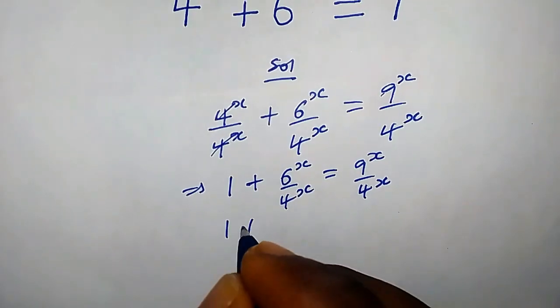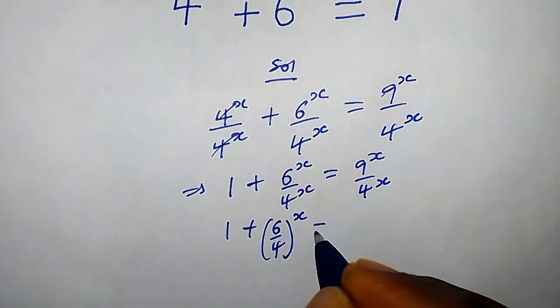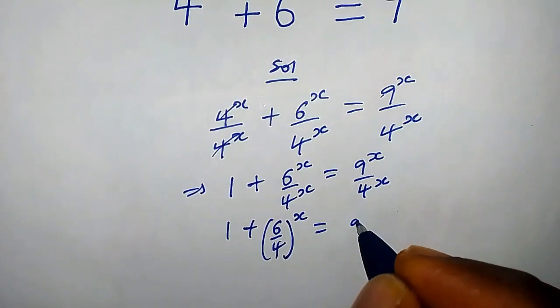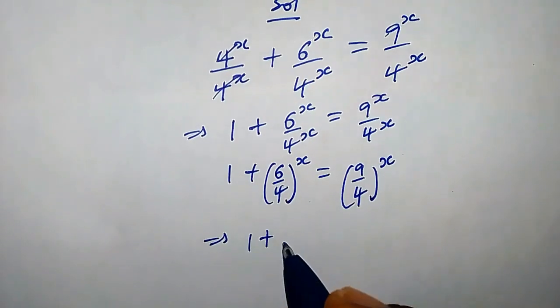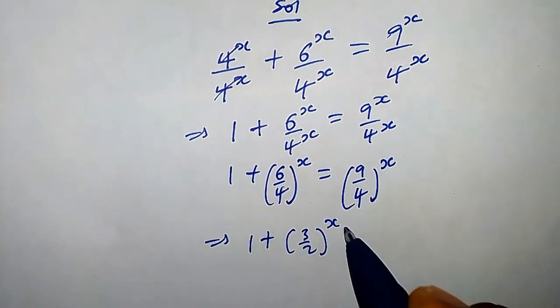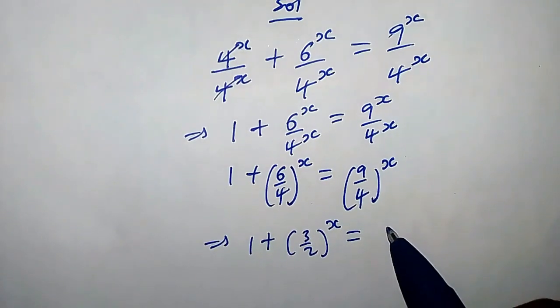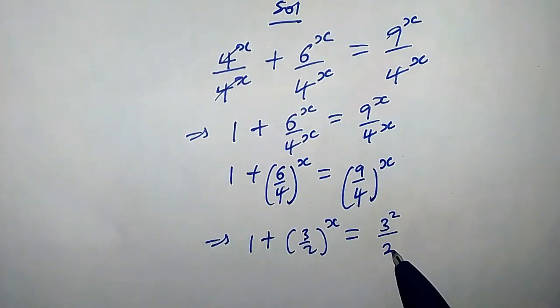So 1 plus, this could be written as (6/4)^x equals (9/4)^x. This implies 1 plus, 6 over 4 is the same thing as 3/2 raised to x equals, we can write 9 as 3 squared over, we can also write 4 as 2 squared.